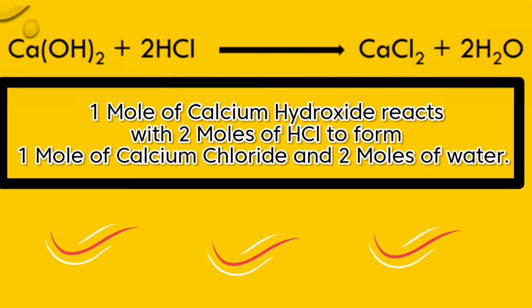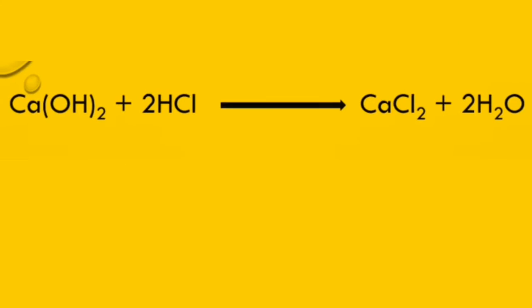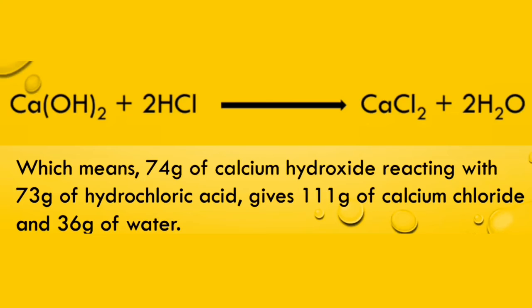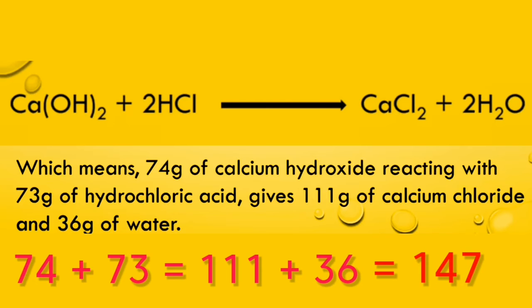When converting to grams, we have 74 grams of calcium hydroxide reacting with 73 grams of hydrochloric acid gives 111 grams of CaCl₂ plus 36 grams of water. You see the law of conservation of mass is also maintained here: 74 plus 73 is 147, which equals 111 plus 36.